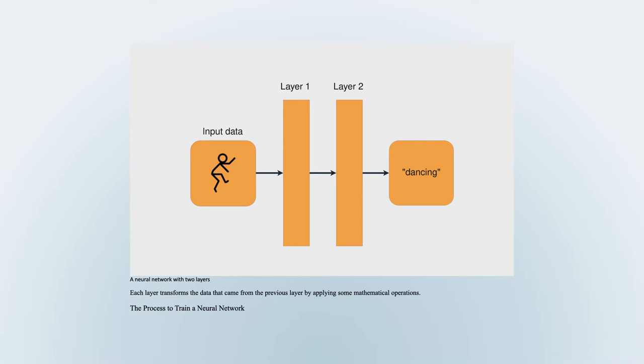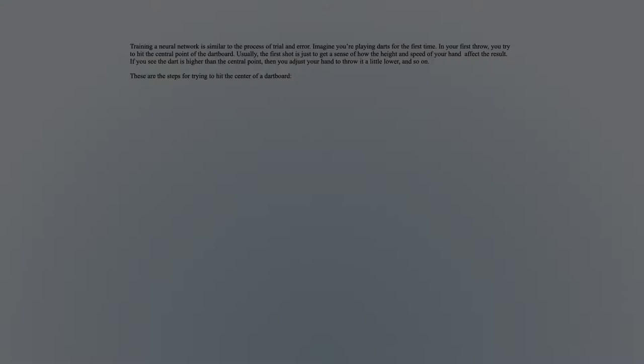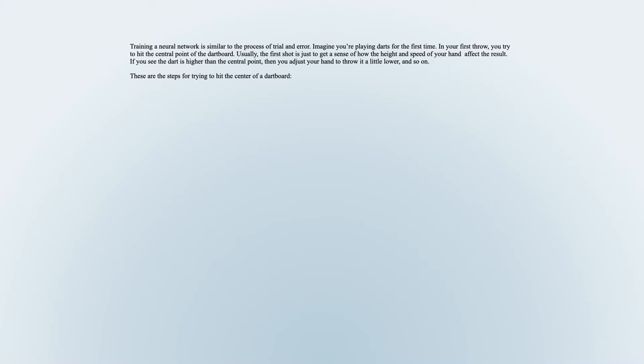The process to train a neural network is similar to trial and error. Imagine you're playing darts for the first time. In your first throw, you try to hit the central point of the dartboard. Usually, the first shot is just to get a sense of how the height and speed of your hand affect the result. If you see the dart is higher than the central point, then you adjust your hand to throw it a little lower, and so on.